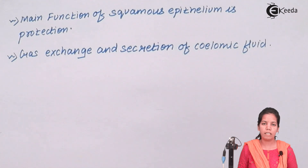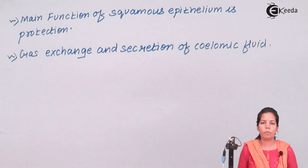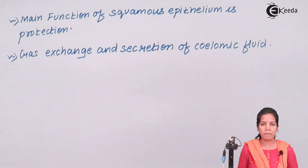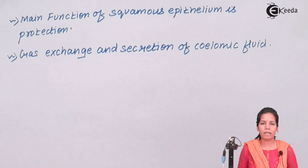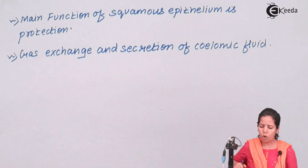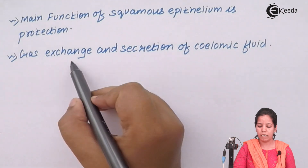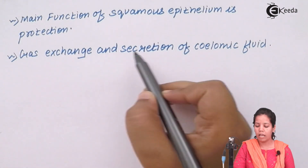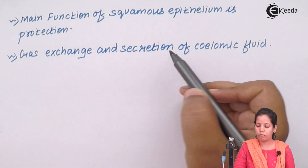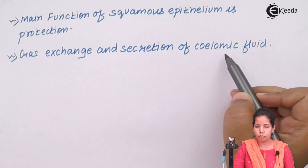The HCl present in your stomach is basically for killing bacteria that enters your body through food. Squamous epithelium, along with your mucous layer, protects the muscular back of the stomach from this HCl. Also, squamous epithelium helps in gaseous exchange and secretion of columnic fluids.